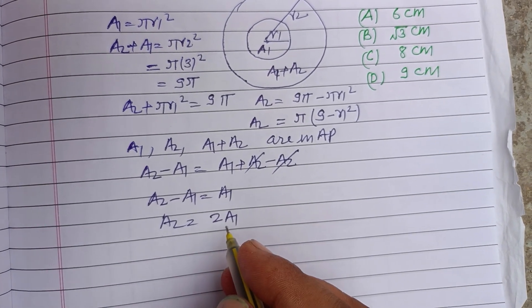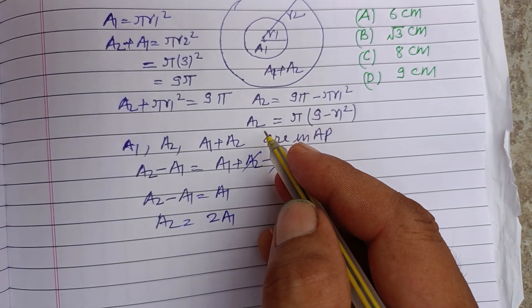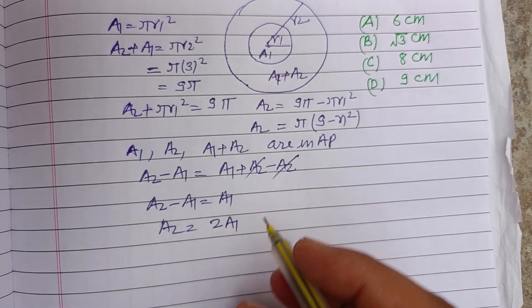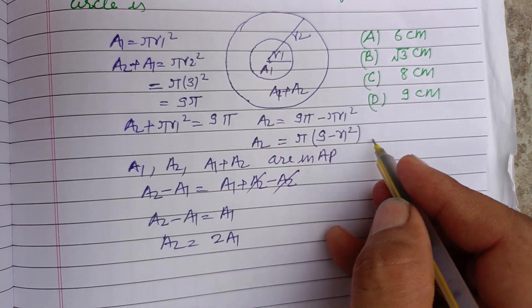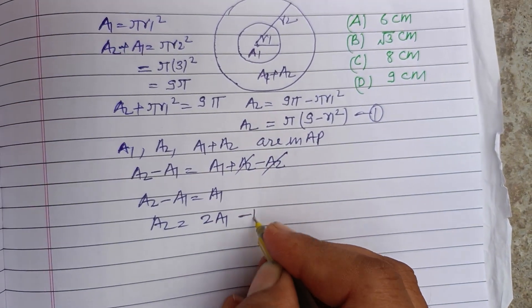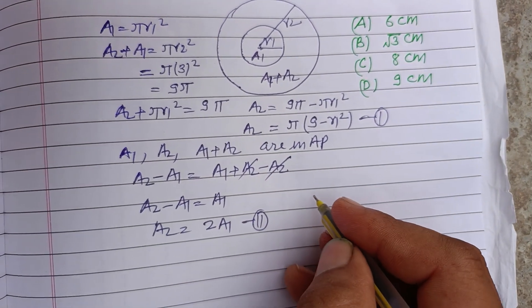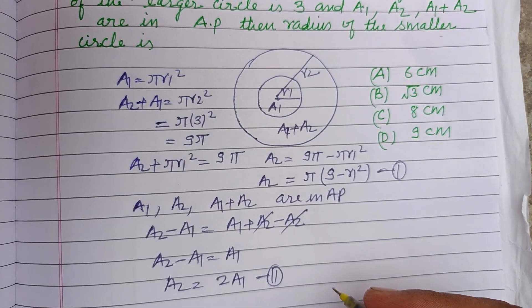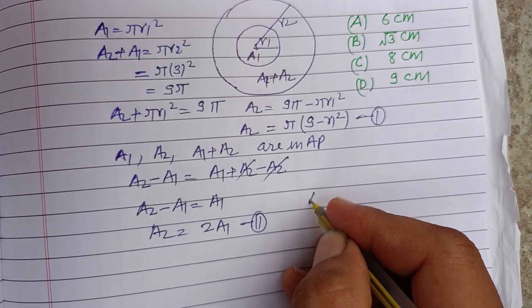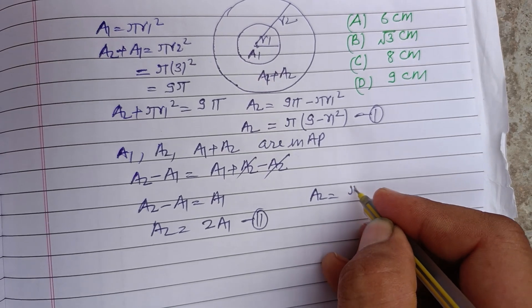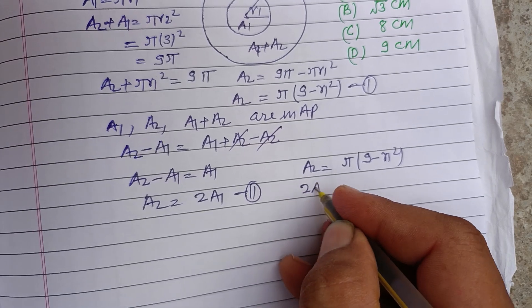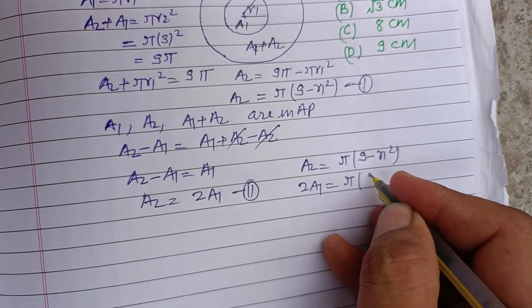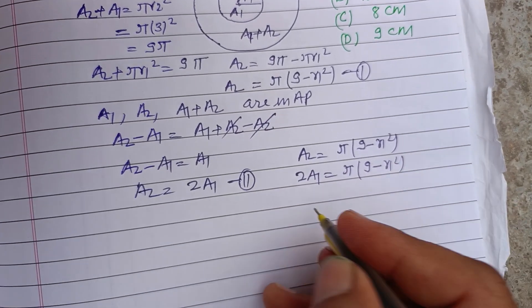So now putting this in, this is our first equation and this is our second. A2 equals pi into 9 minus r1 squared.